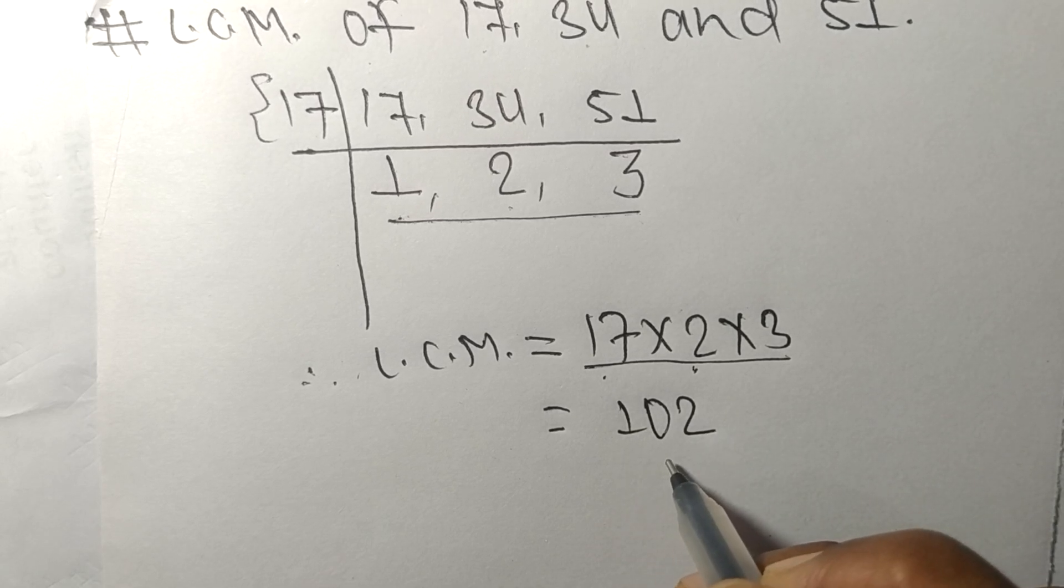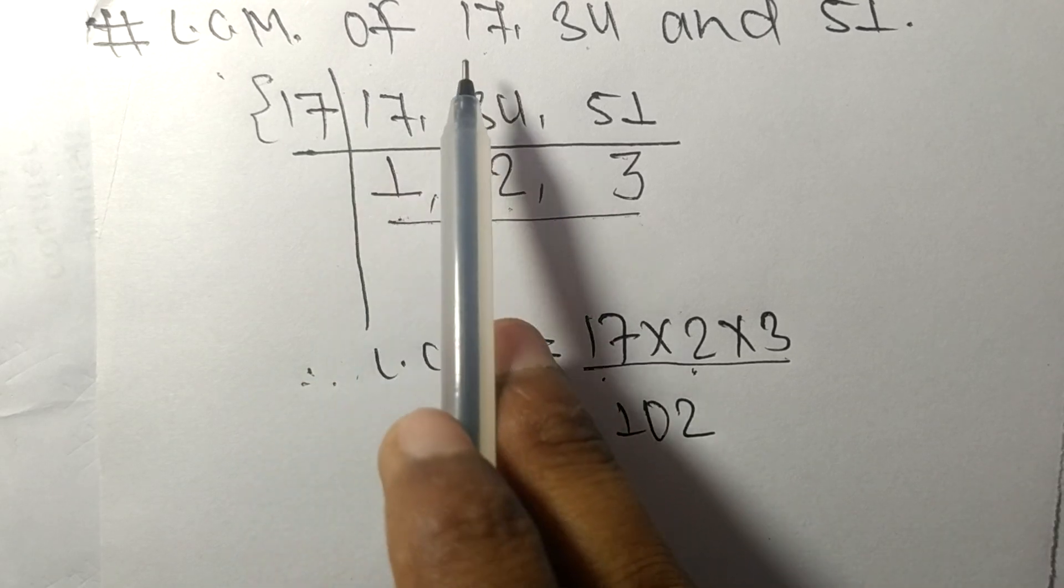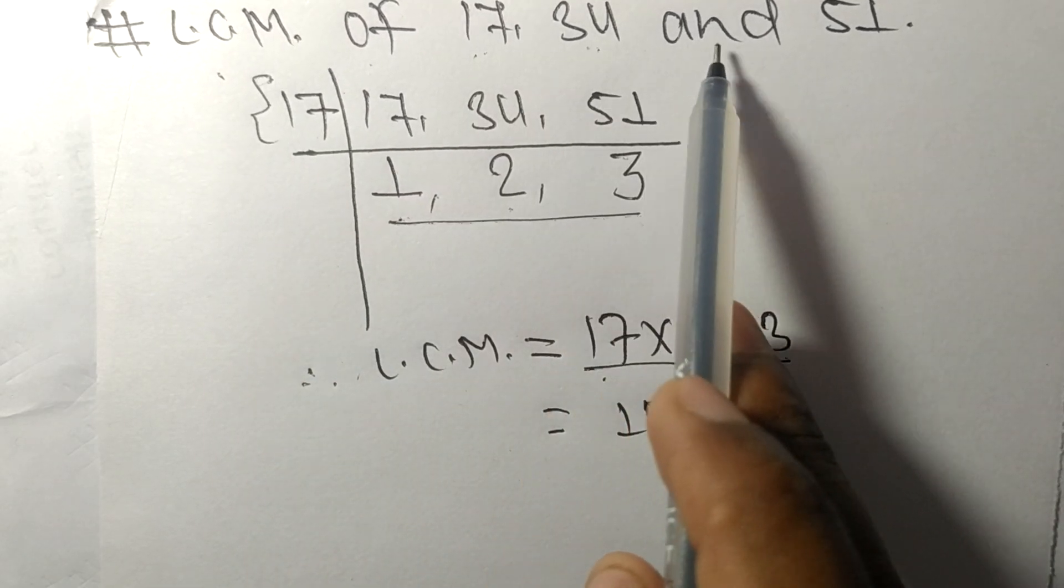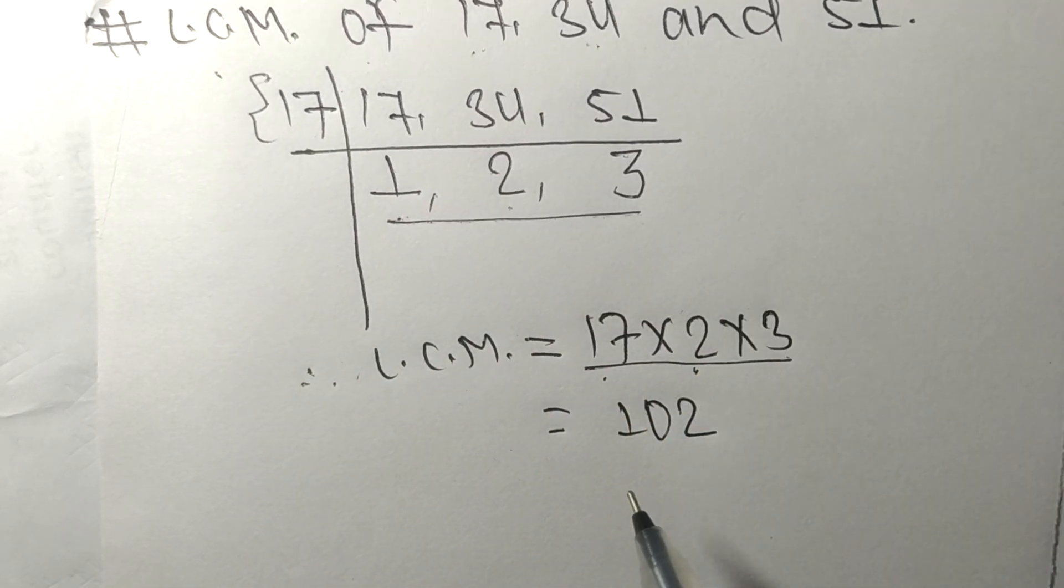So 102 is the LCM of 17, 34, and 51. So this much for today and thanks for watching.